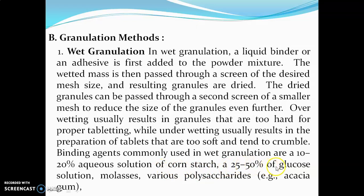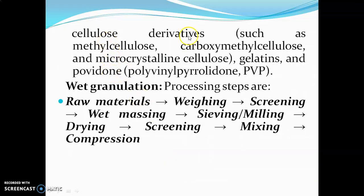Binding agents commonly used in wet granulation are: a 10–20% aqueous solution of corn starch, a 25–50% glucose solution, molasses, various polysaccharides such as acacia gum, cellulose derivatives such as methylcellulose, carboxymethylcellulose, and microcrystalline cellulose, gelatin, and povidone (polyvinylpyrrolidone, PVP).